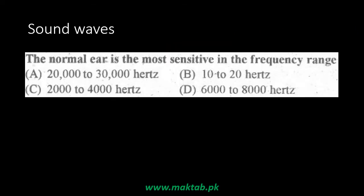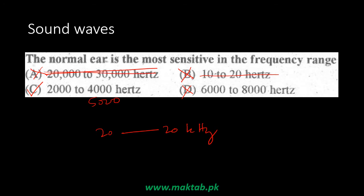A normal ear is most sensitive in the frequency range of 20 Hz to 20 kHz, but people are most sensitive to sounds between 2,000 and 5,000 Hz. Frequencies from 10 to 20 Hz are not audible, and the range 20,000 to 30,000 Hz is ultrasonic. The most easily heard range for humans is roughly 2 to 4 kHz.